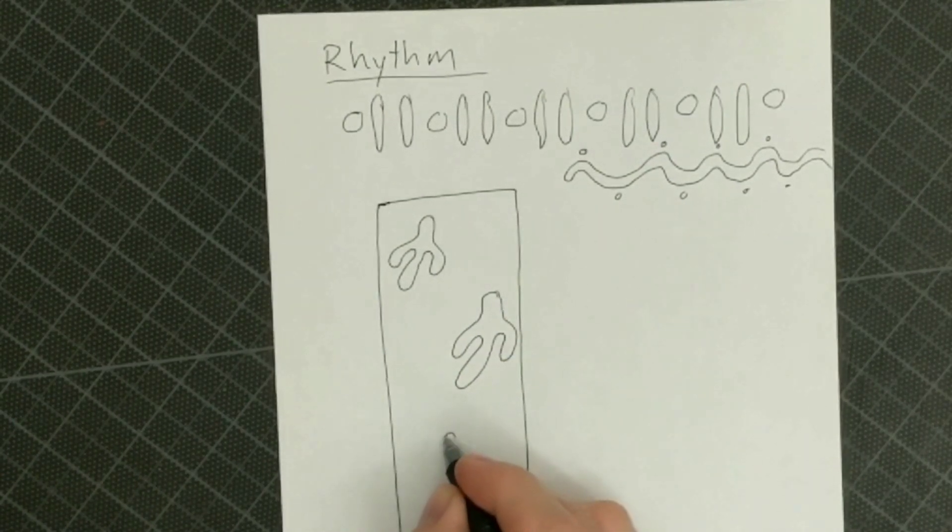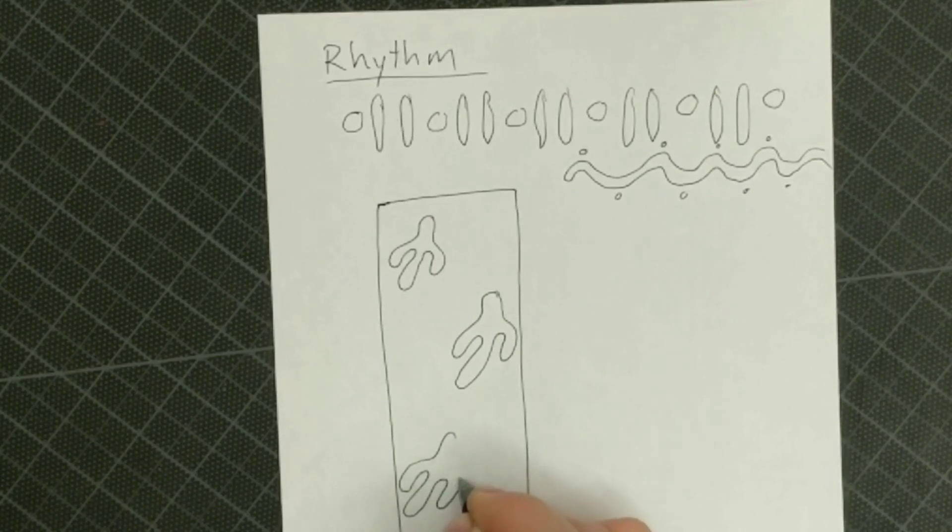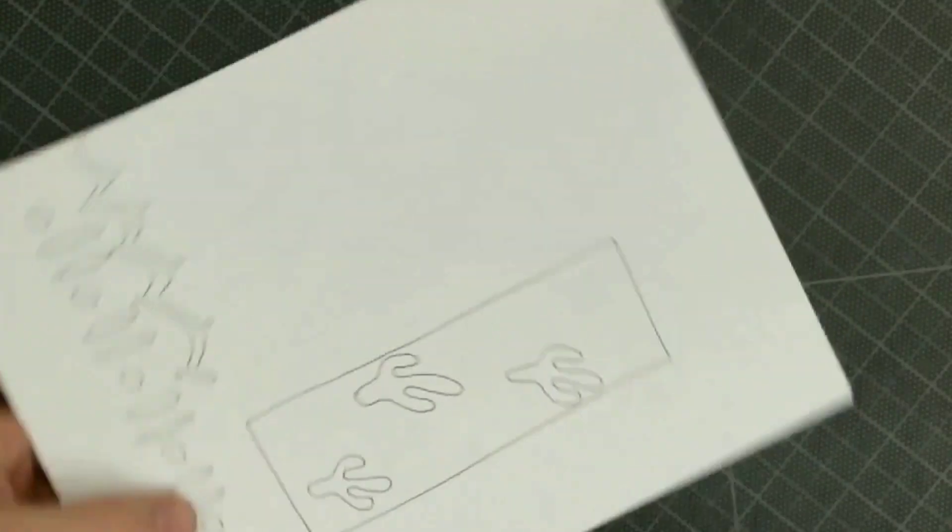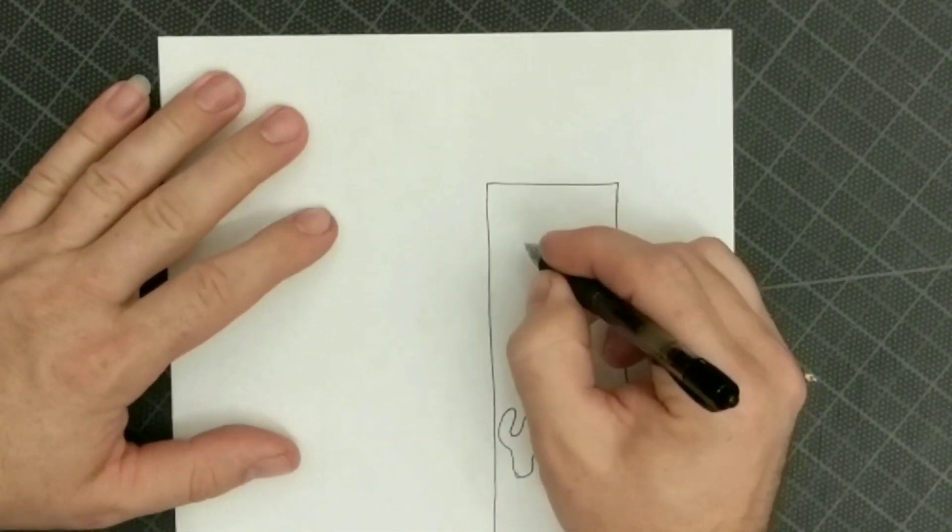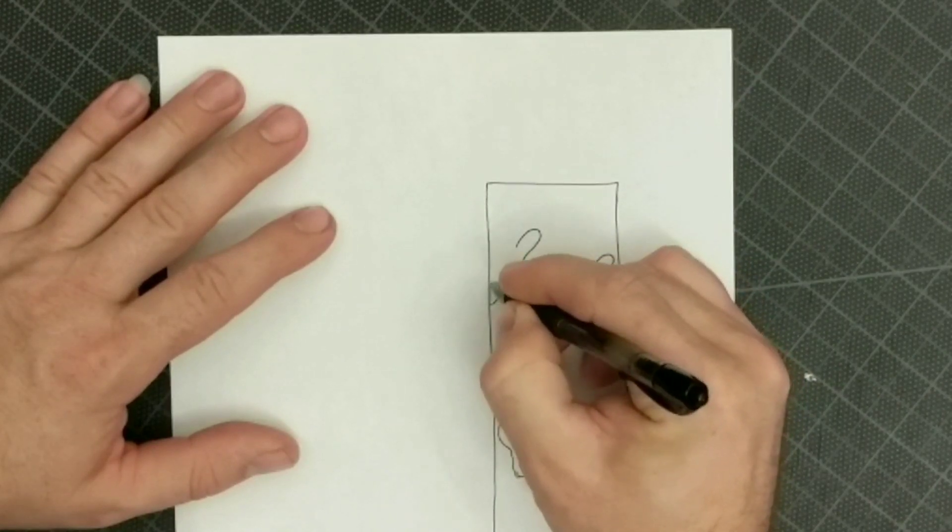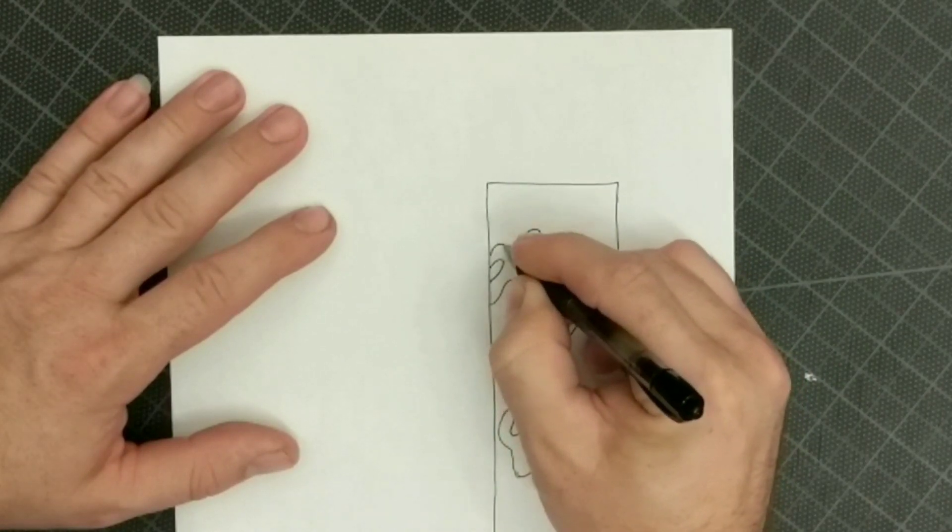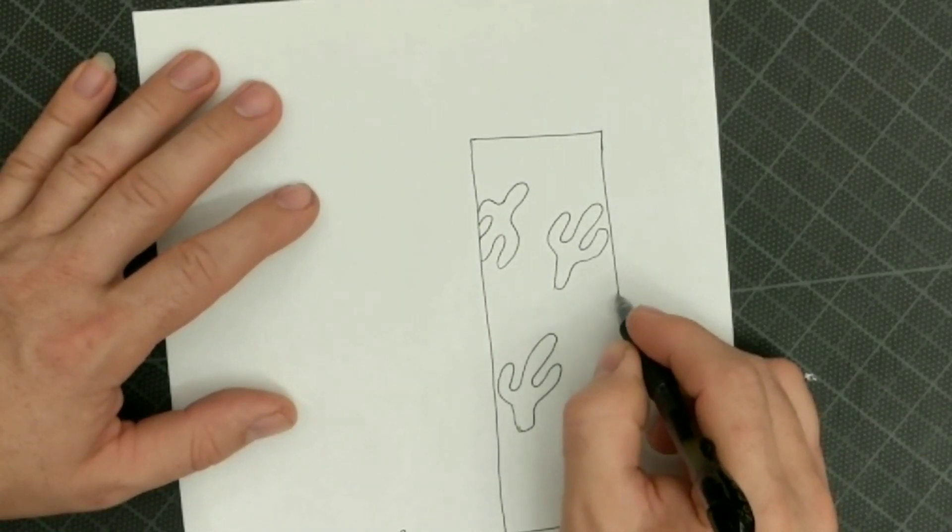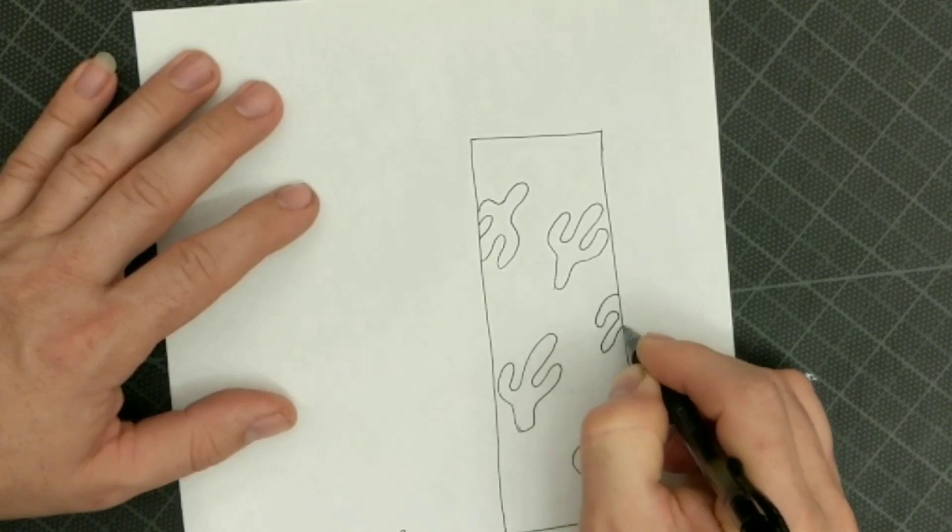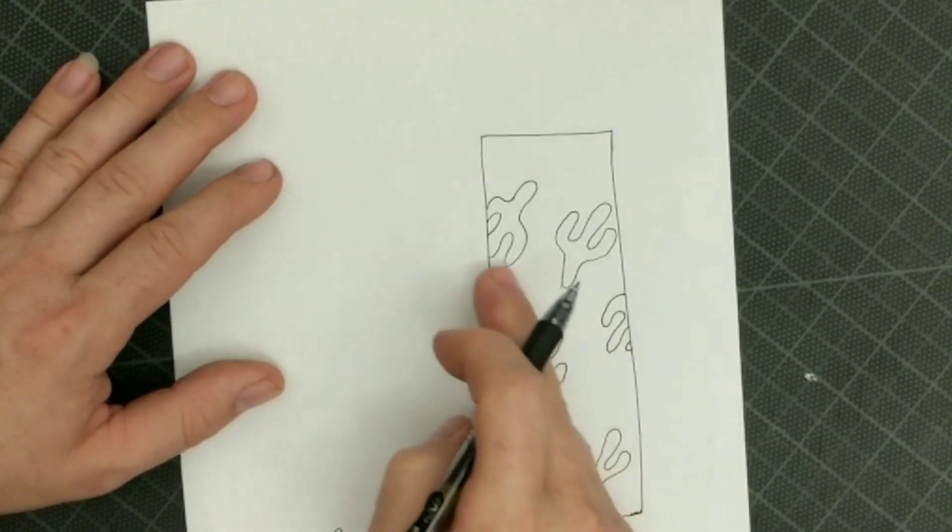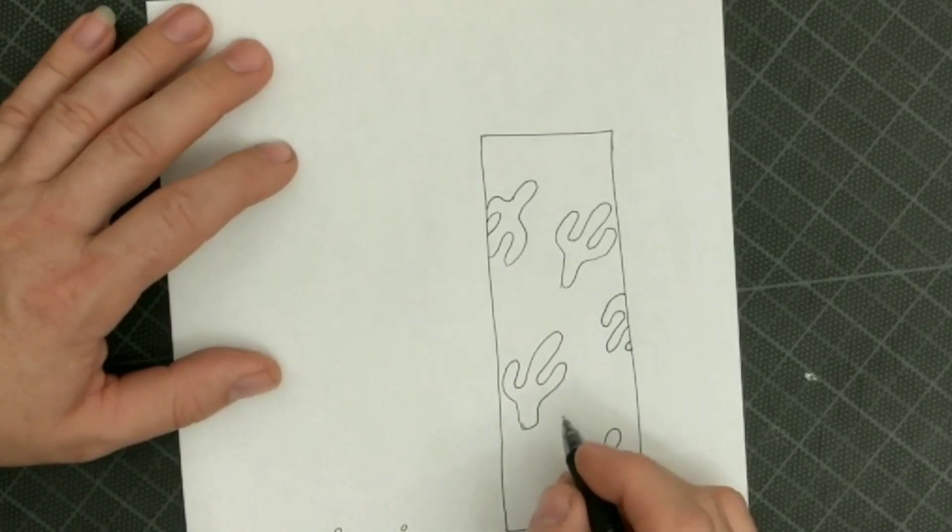They don't have to be exactly the same because the human brain puts it together and gets it. And they don't even necessarily have to go the same direction. In order for it to create that rhythm, you also don't even have to see the whole shape to understand that it's being repeated.